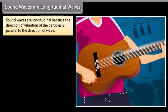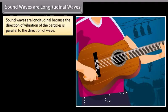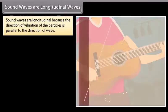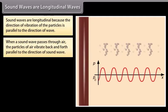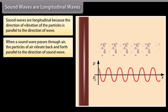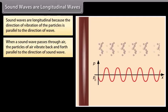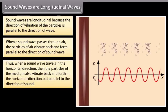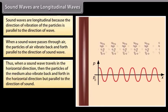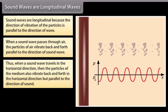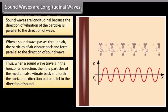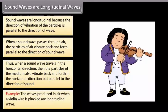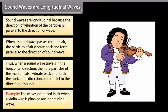Sound waves are longitudinal because the direction of vibration of the particles is parallel to the direction of wave. When a sound wave passes through air, the particles of air vibrate back and forth parallel to the direction of sound wave. Thus when a sound wave travels in the horizontal direction, then the particles of the medium also vibrate back and forth in the horizontal direction but parallel to the direction of sound. For example, the waves produced in air when a violin wire is plucked are longitudinal waves.